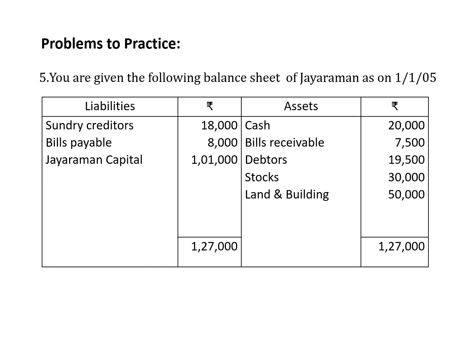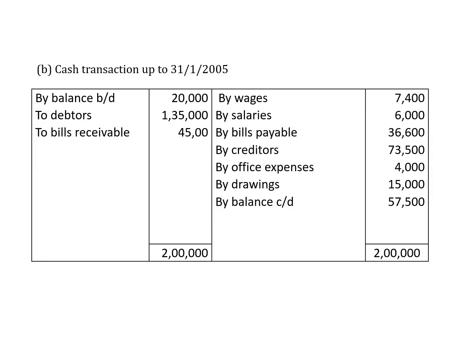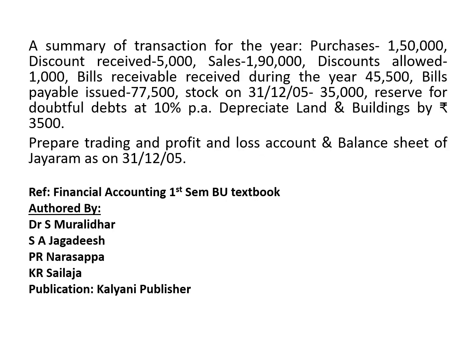Here is one more problem for you to work out. You have learned the various adjustments and entries in detail — this is also a similar problem. Work it out with adjustments. Cash transactions and adjustments related to Jayram's problem are given — look into these items and make the trading and P&L account and balance sheet.